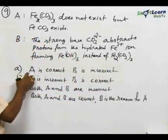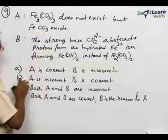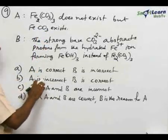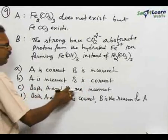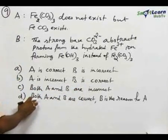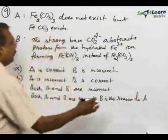Now, option A: A is correct and B is incorrect. One of the statements is correct. Option B: A is incorrect and B is correct. Option C: both A and B are incorrect. And option D: both A and B are correct and B is the reason for A.